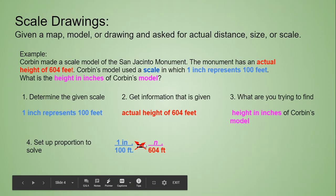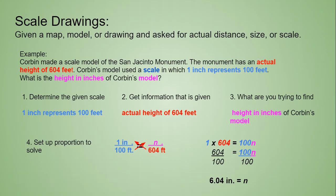You use your cross product method. So 604 times 1 is 604. 100 times N is 100N. And then you would divide by 100. So 604 divided by 100 is 6.04 inches or 6 and 4 hundredths of an inch.